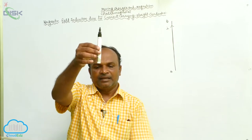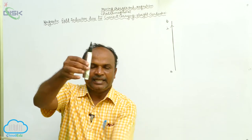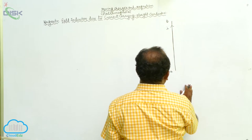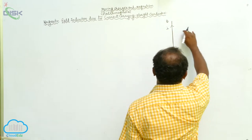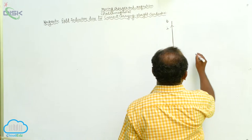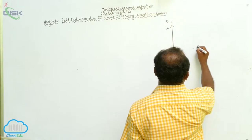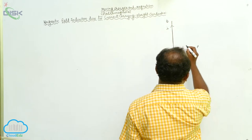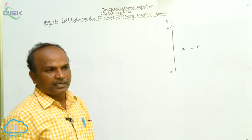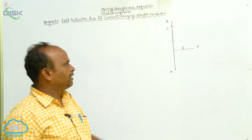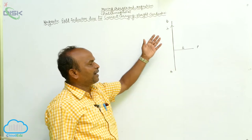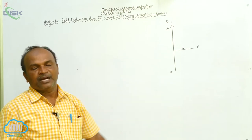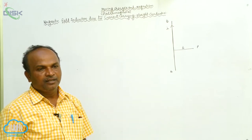The current carrying conductor is oriented vertically, and the magnetic field lies perpendicular to it. At a particular point — let us call it point B — the perpendicular distance from the conductor is D. We want to calculate the magnetic field induction at point B, at a perpendicular distance D.